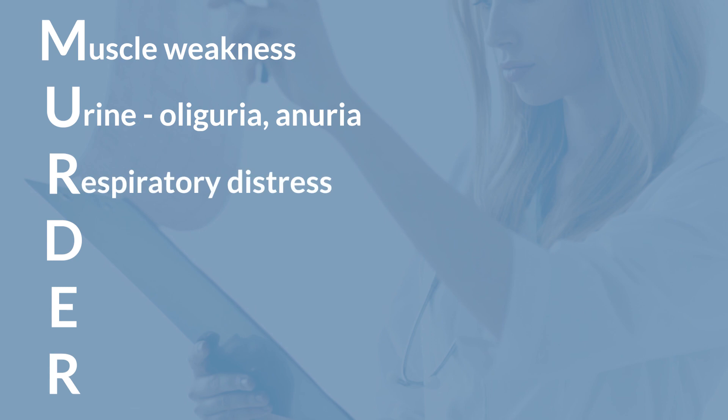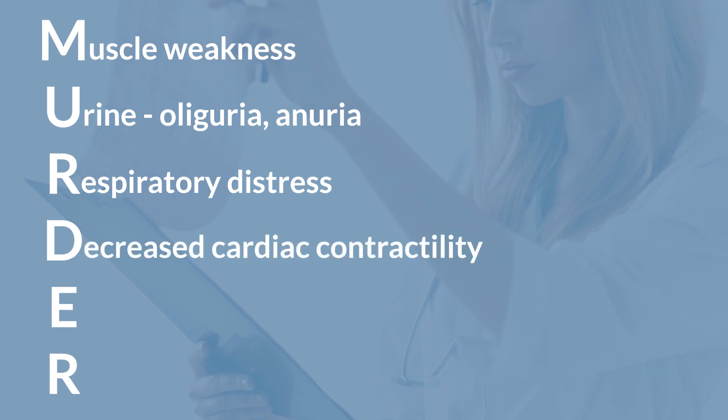R stands for respiratory distress. Patients that have high levels of potassium could experience some level of respiratory distress. D stands for decreased contractility of the heart. We want to keep an eye on that heart and make sure that it's still appropriately squeezing and getting all the blood where it needs to go.